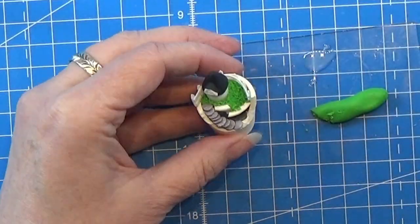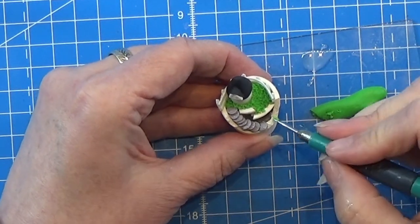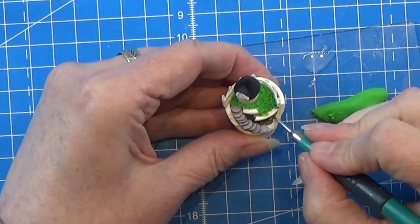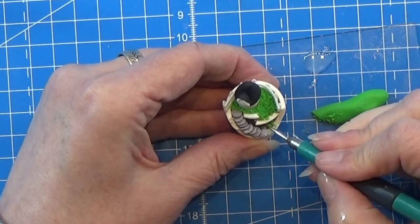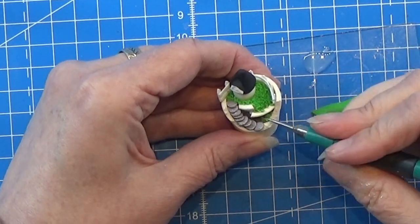Then I am placing some grass in the leftover spots here, again just scratching a tiny piece of the green clay off and placing it where I need some more grass.